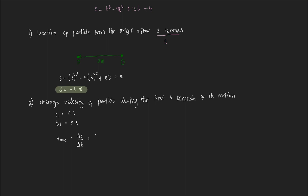So that would be S₂ minus S₁ over T₂ minus T₁. We have T₂ and T₁, but we don't know the position of the particle during these times. At time equals 0, where was the particle located? And at T₂, 5 seconds, where was the particle located?